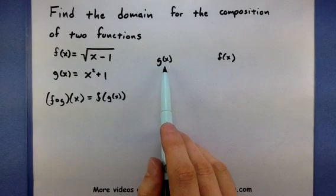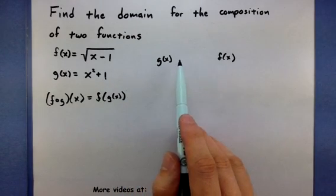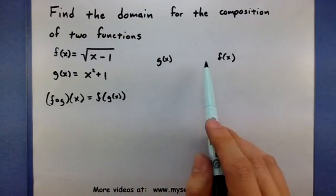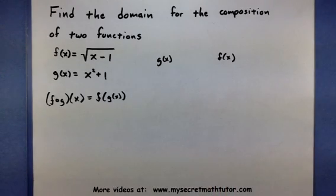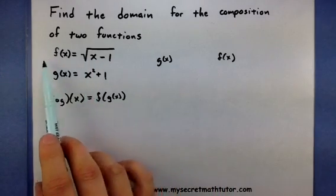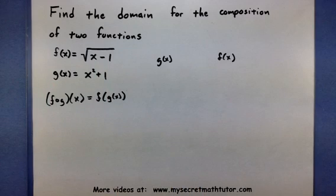First our inputs will go into our function g, it will take care of it, spit an output out, then that's going to go into f, and then that's going to create some sort of output. So essentially we need to look at the domain and range for both g and f.